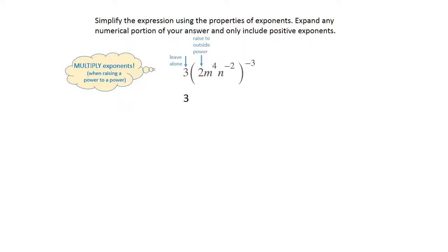The 2 that is inside the parentheses must be raised to the outside power before anything else can be done. So we're going to do a multiplication dot and 2 raised to the negative 3rd power.